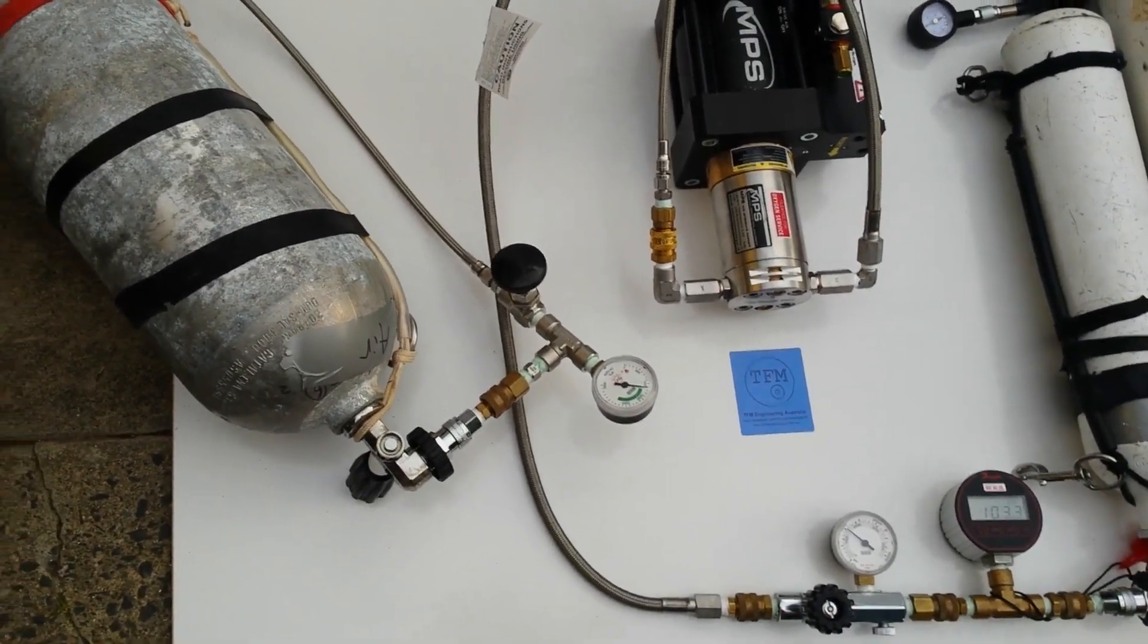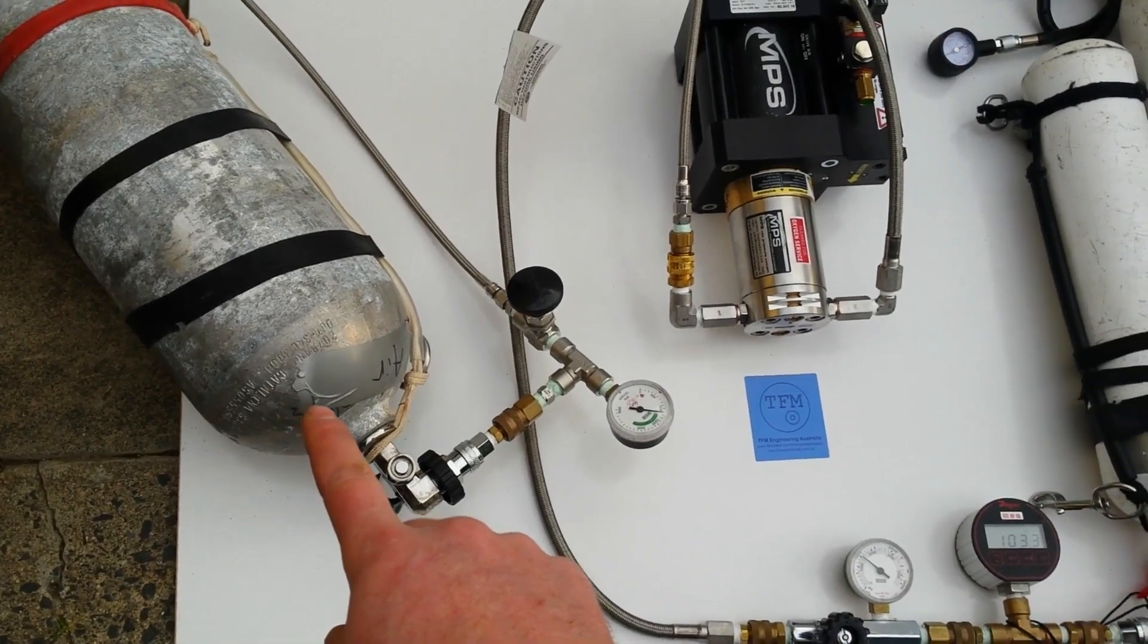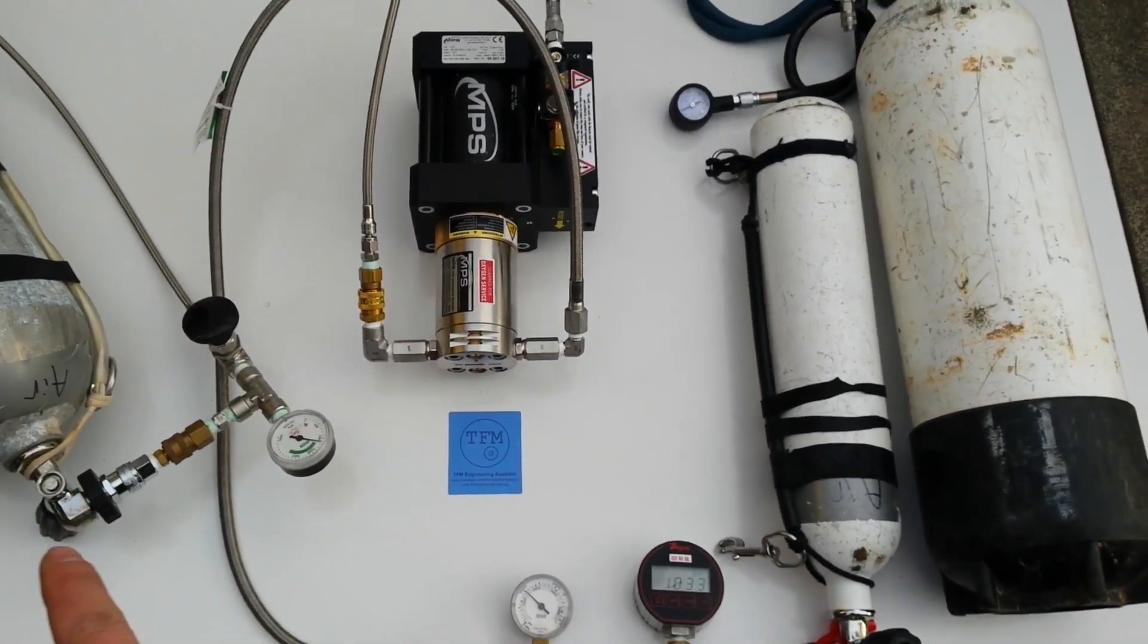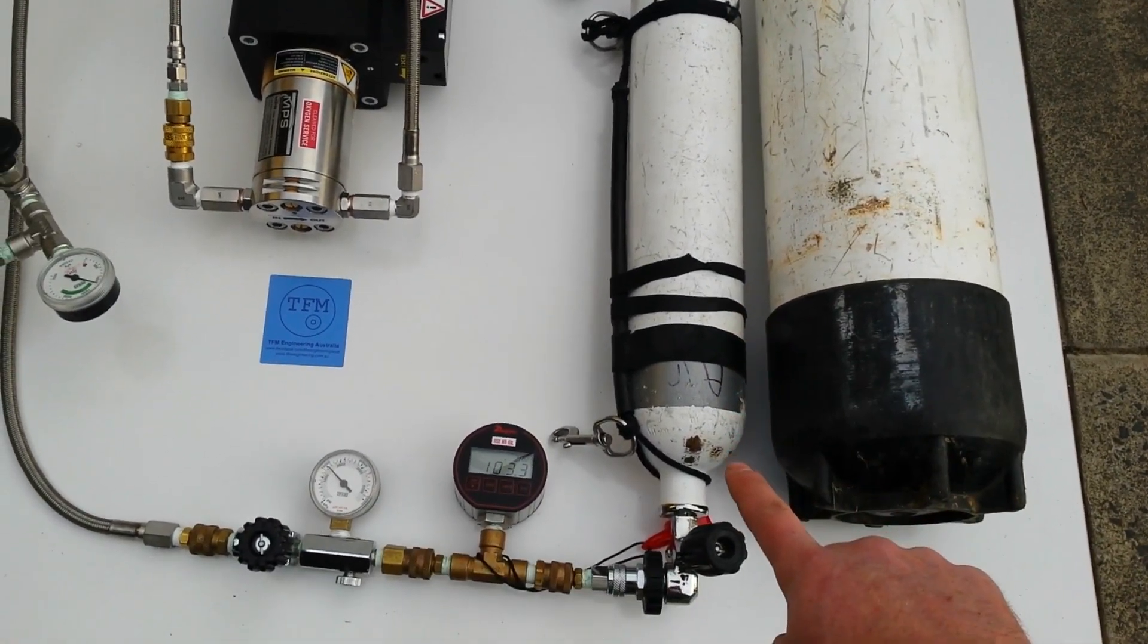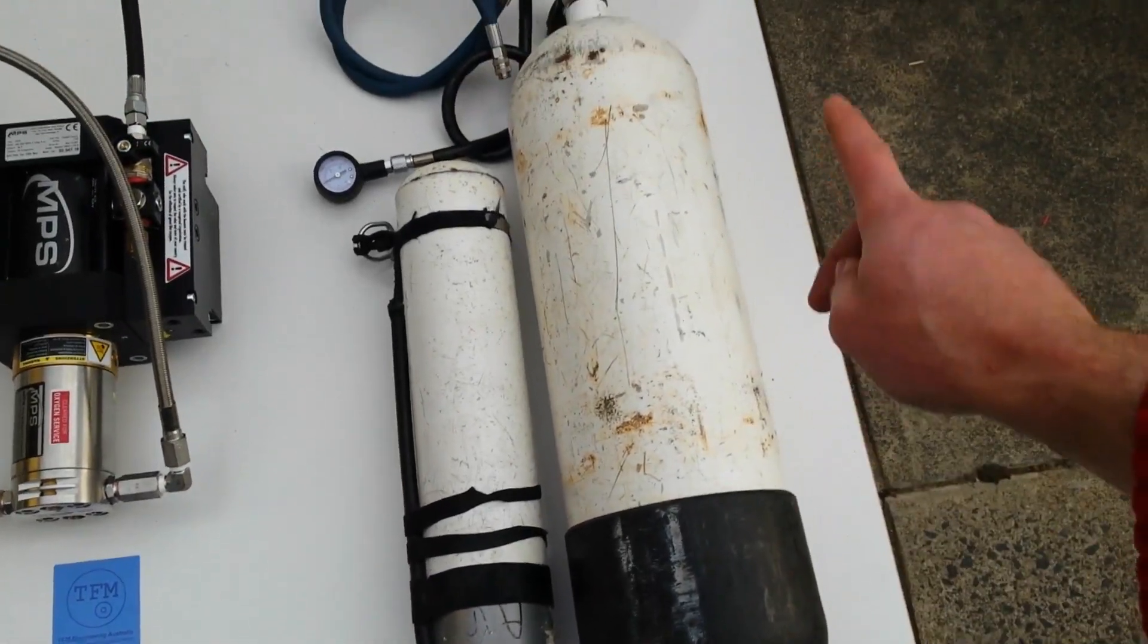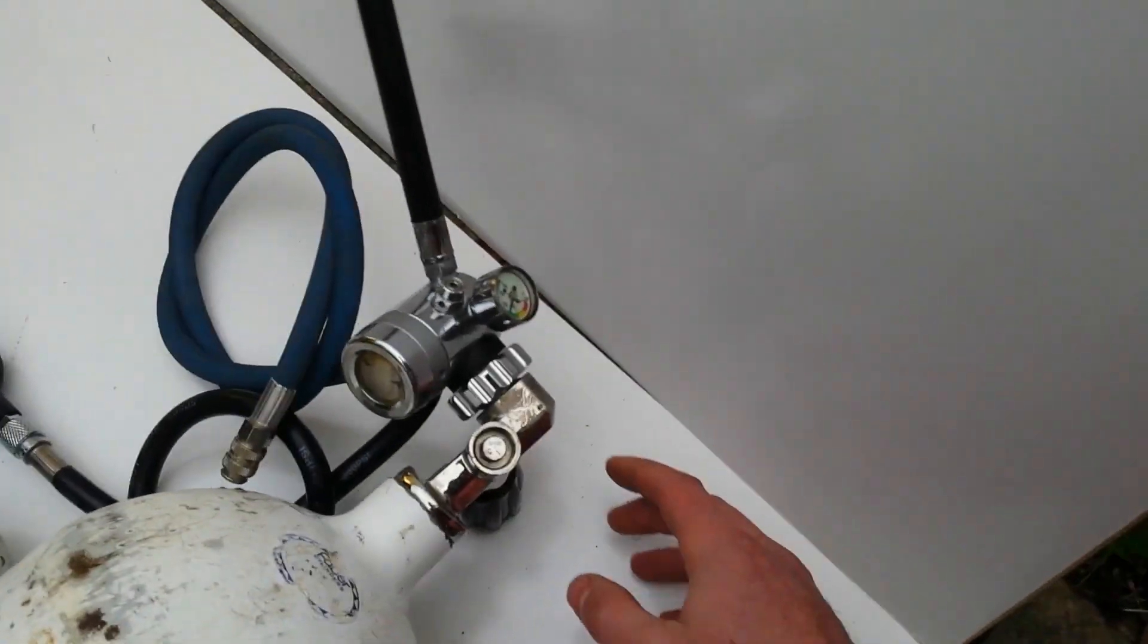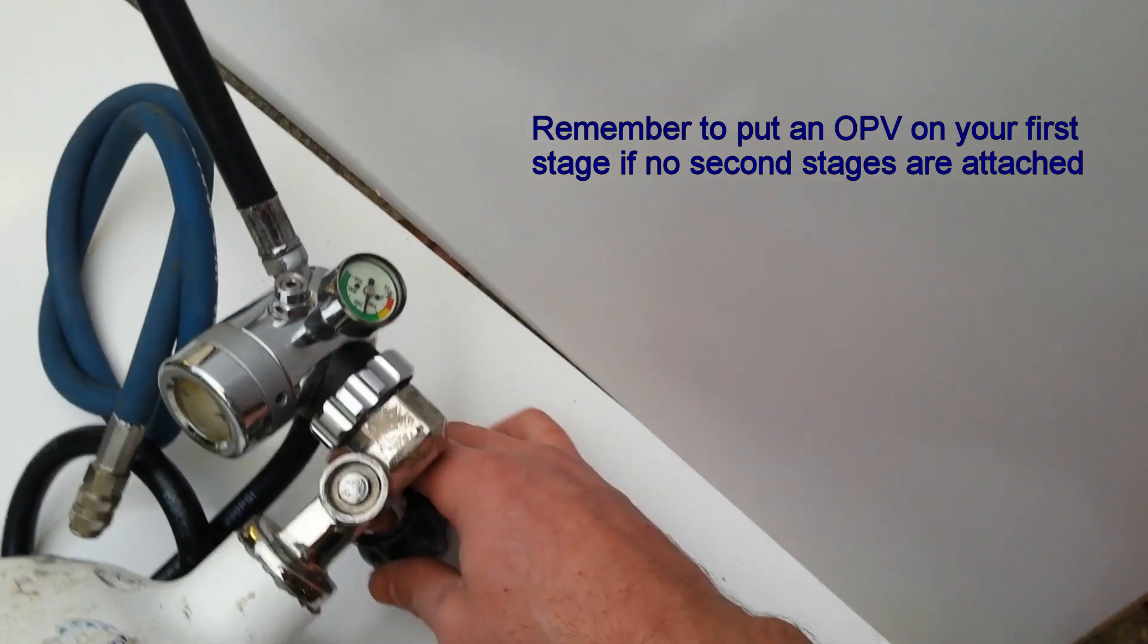We're using the standard test of a standard 80 cubic foot, 11.1 liter scuba cylinder as the donor, just running with air for the test into a standard Faber steel 3 liter rebreather cylinder. It's also air, and I'm using a 12 liter steel of drive gas.